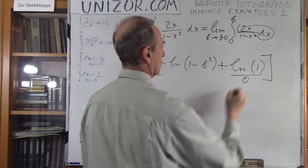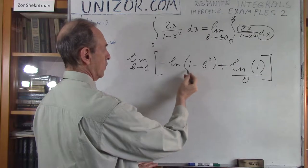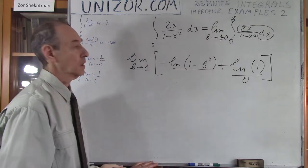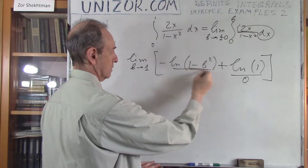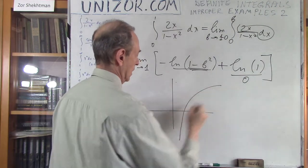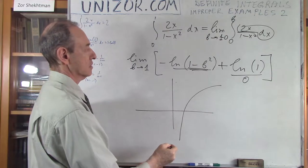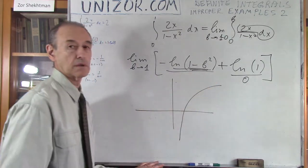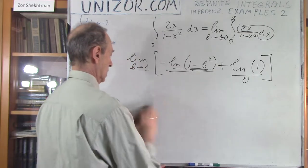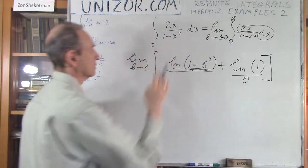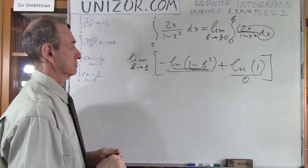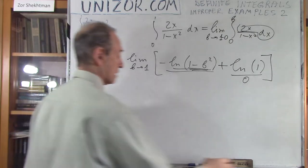When b goes to 1, (1 minus b squared) goes to 0, which means the logarithm goes to minus infinity. So this would be a non-convergent value — the logarithm goes to minus infinity when its argument goes to 0. Therefore the whole integral is non-convergent.